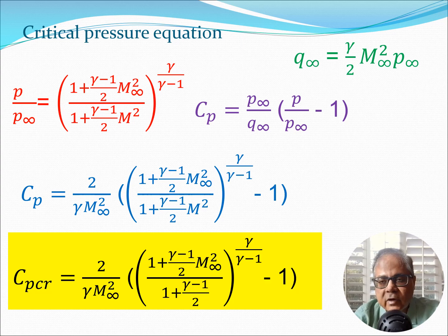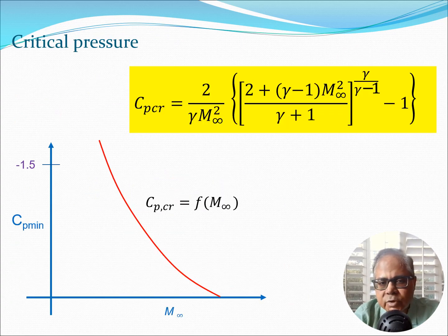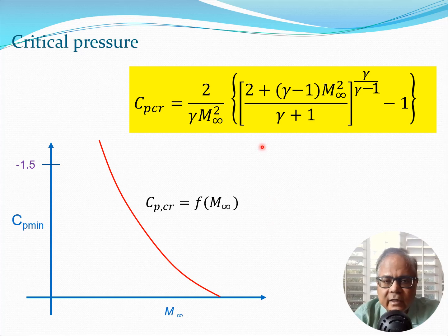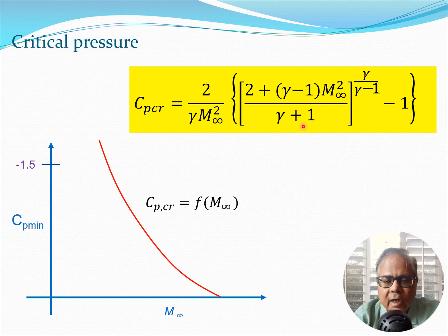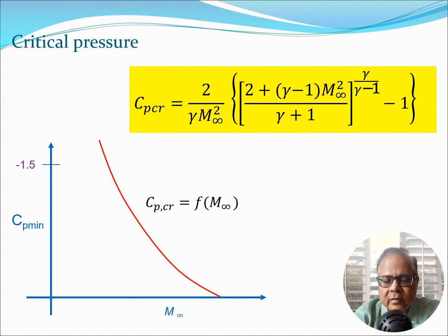With M = 1 substituted, the free stream Mach number M_∞ remains, and simplifying further gives the equation for CP_CR. Plotting this equation yields a graph that is purely a function of M_∞ and γ — a property of air. Given these two values, one can quickly calculate the critical pressure coefficient.